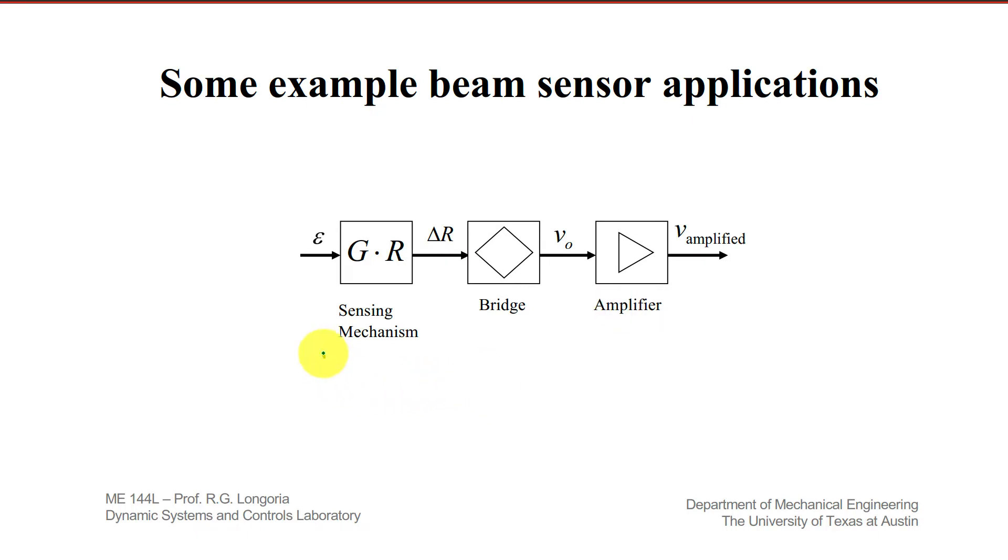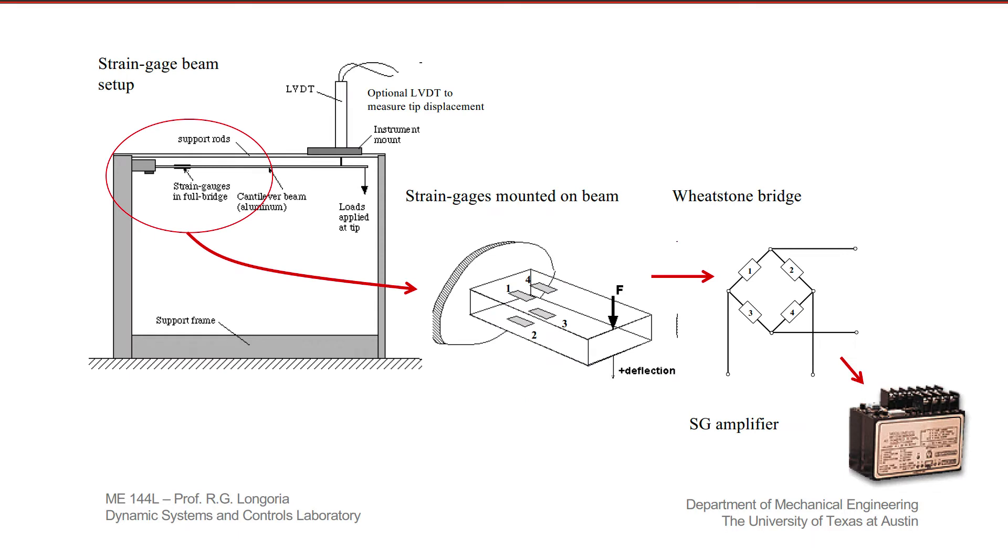This constitutes all of this system here as a measurement system for force type measurement. Here's a beam type setup that we've used in the past that uses the cantilevered beam configuration discussed earlier. Four strain gauges configured as a full Wheatstone bridge, and the output of the bridge serves as inputs to this instrumentation amplifier, and then the output in the form of amplified voltage can go directly to some form of data acquisition.